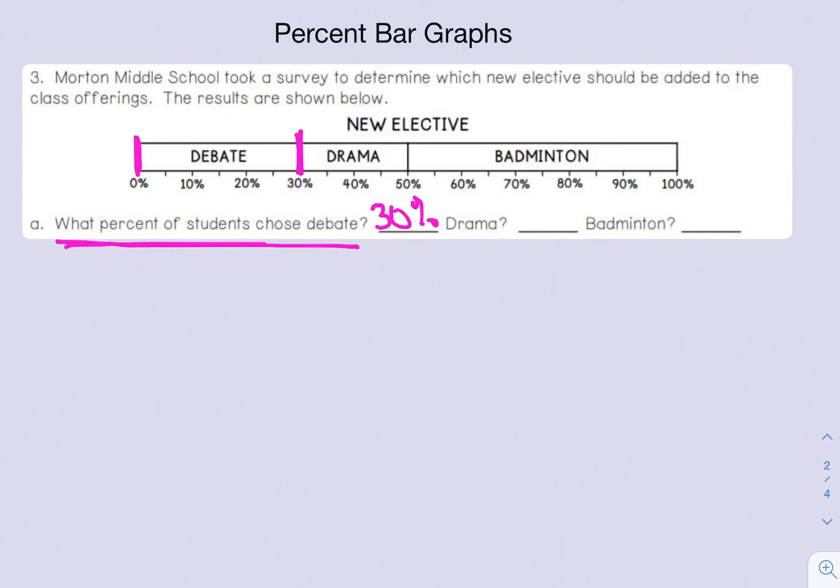What percent of students chose drama? Now some students may say drama ends at 50 percent so it's 50 percent, but it goes from 30 to 50. So you have to subtract 50 minus 30, which gives us 20. So it's going to be 20 percent.